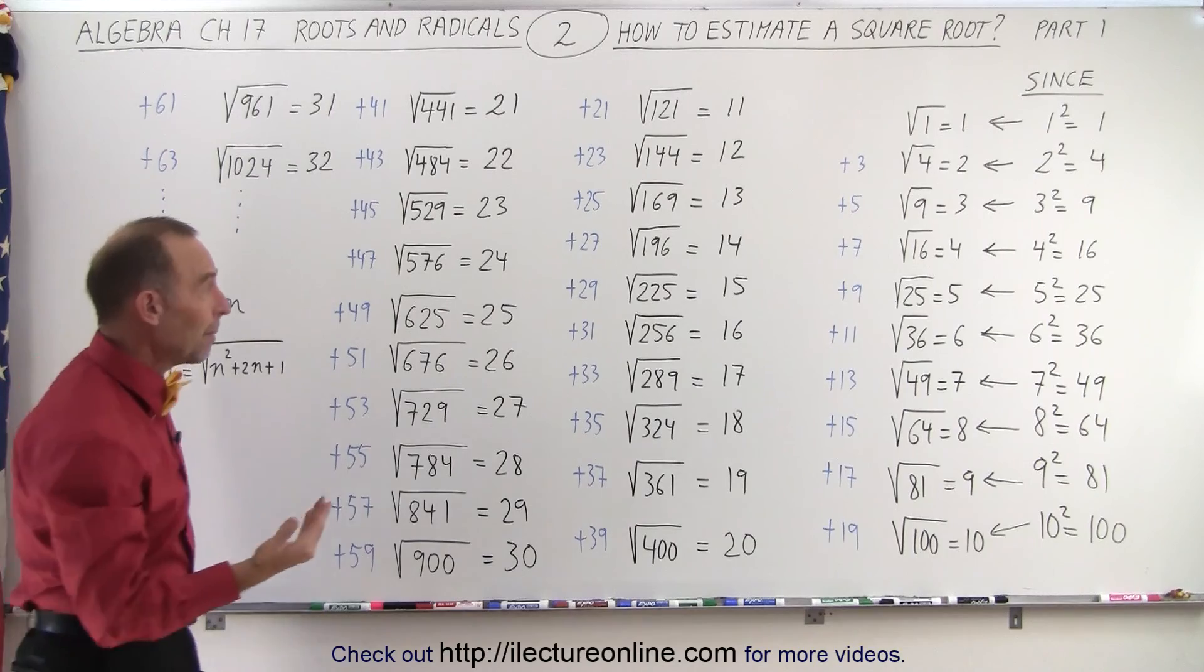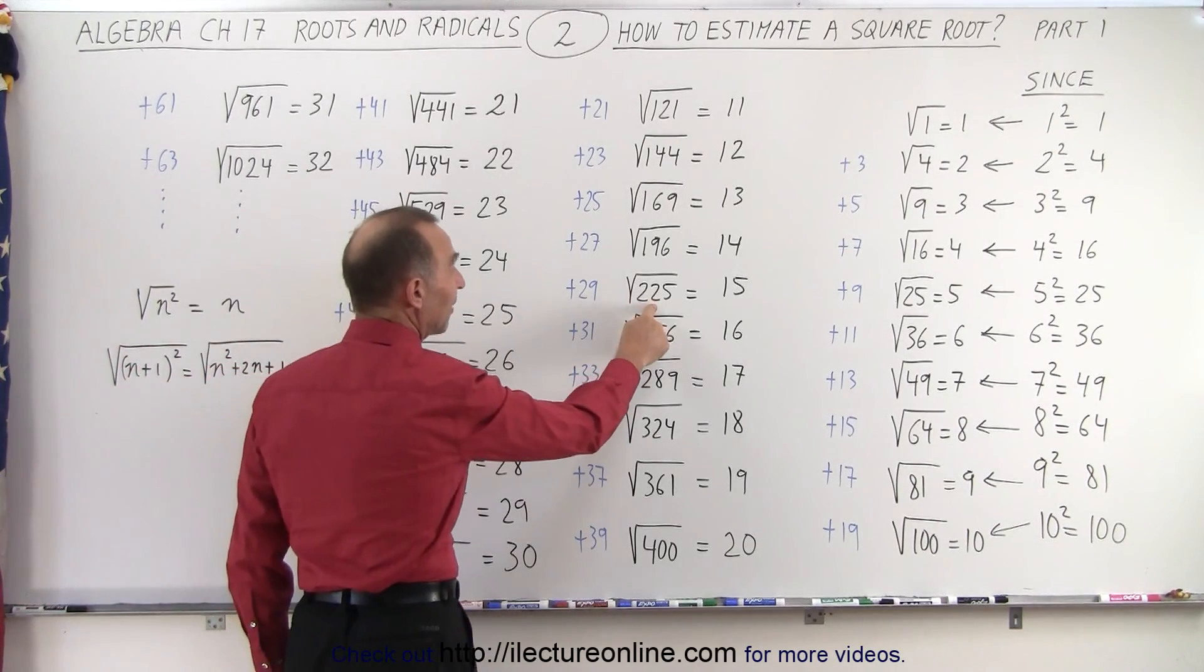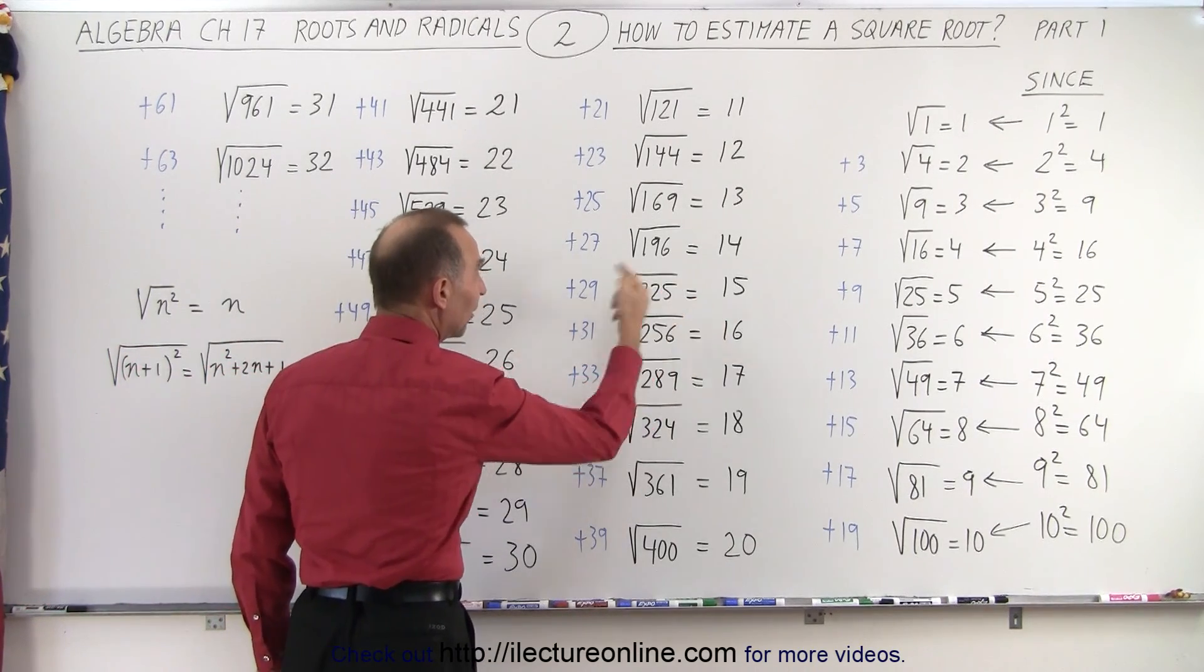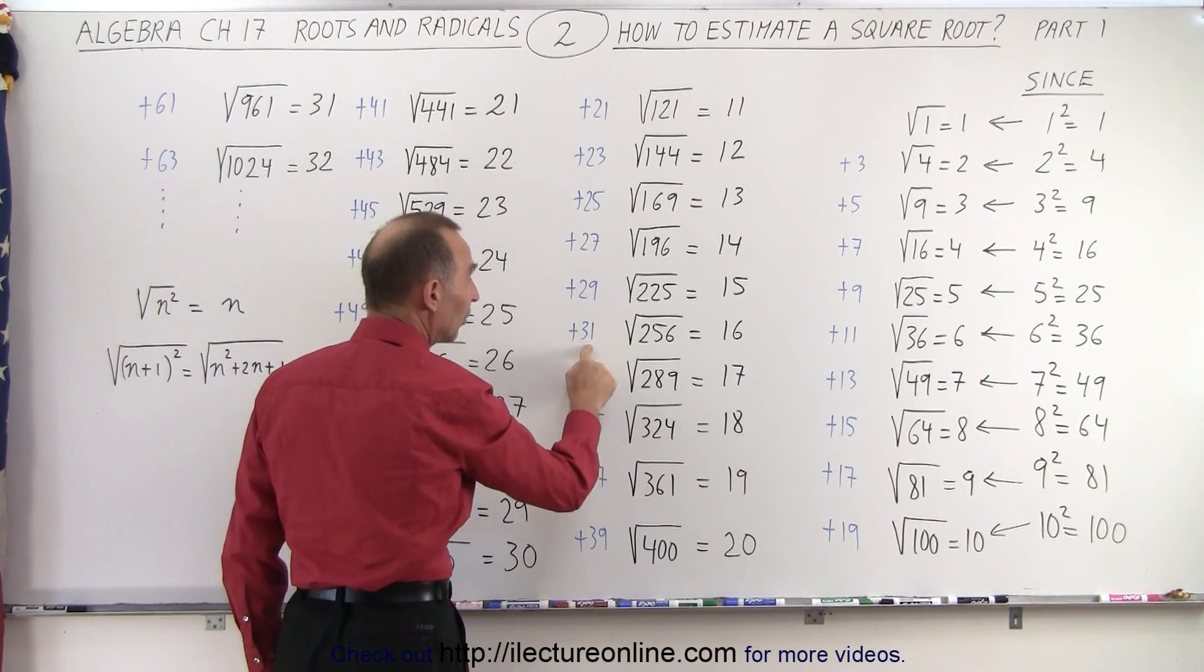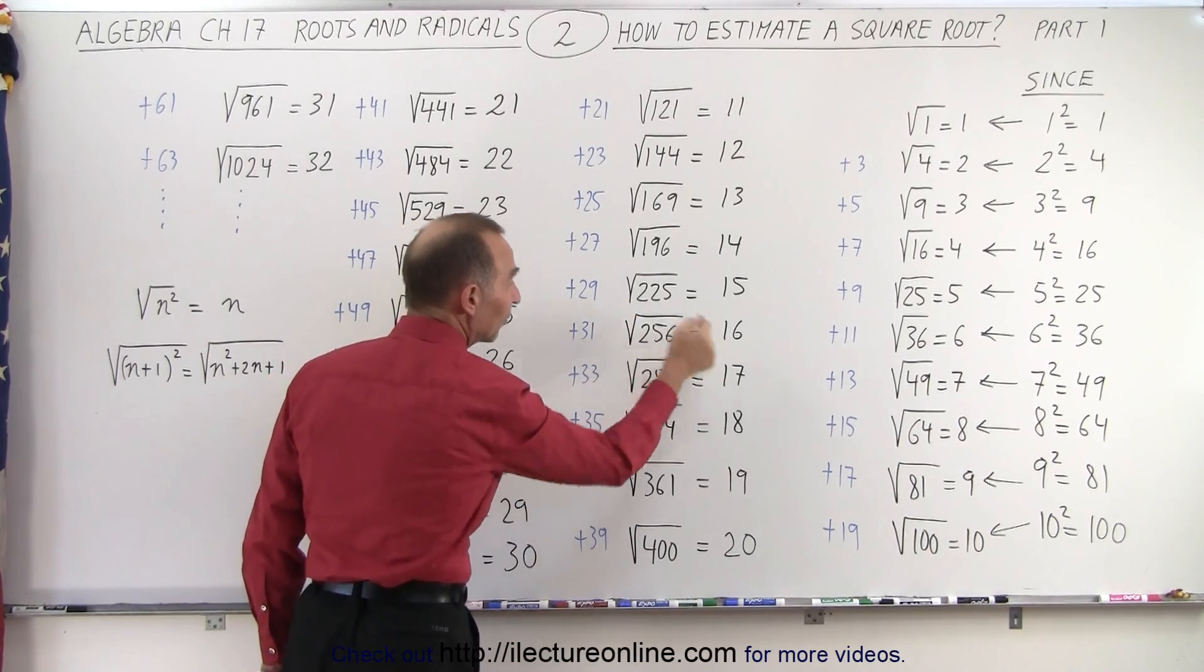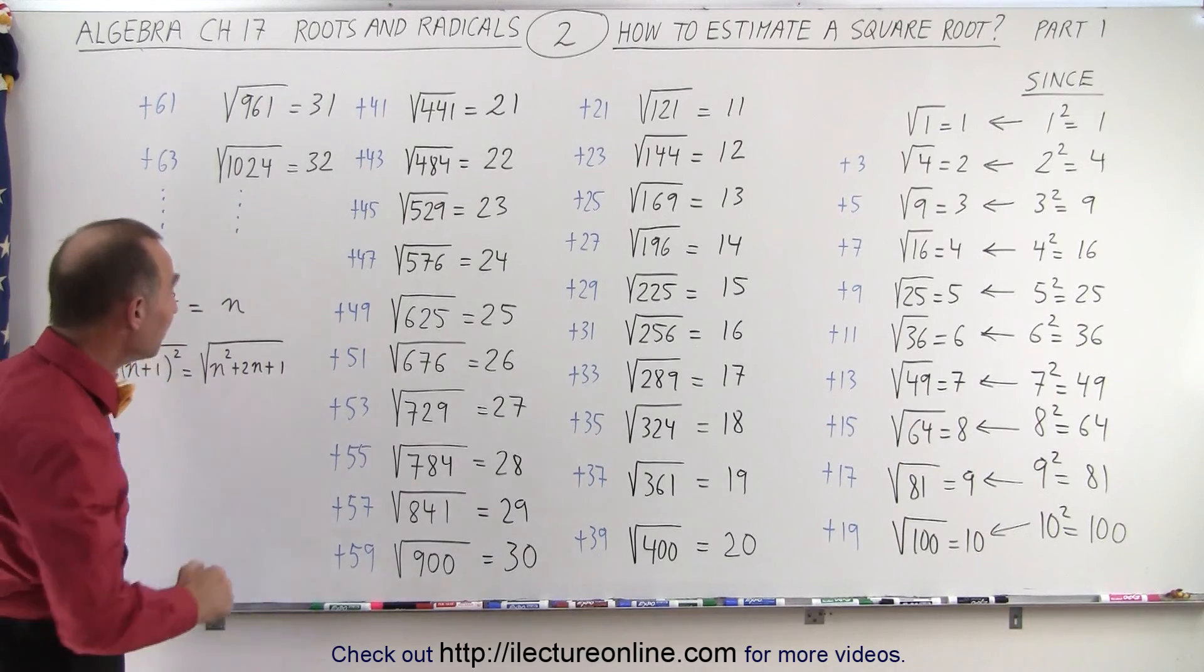For example, if you remember what the square root of 225 is being 15, then it's very easy to know then by adding 31 that the square root of 256 is equal to 16. Where does that come from?